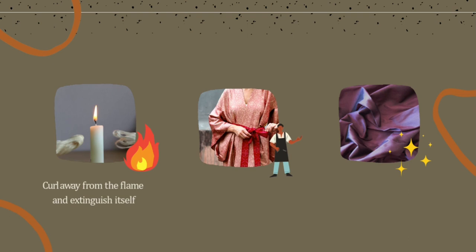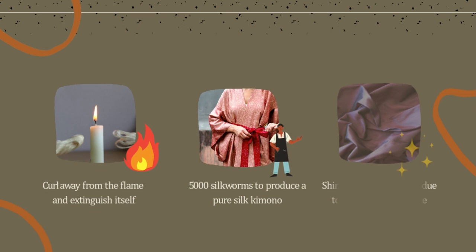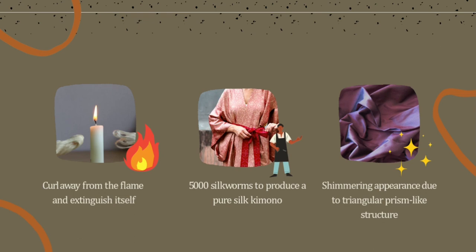On top of that, silk is inherently fire-retardant — if the silk breaks near a flame, it will curl away and extinguish itself. It takes roughly 5,000 silkworms to produce a pure silk kimono. The shimmering appearance of silk is due to the triangular prism-like structure of the silk fiber.